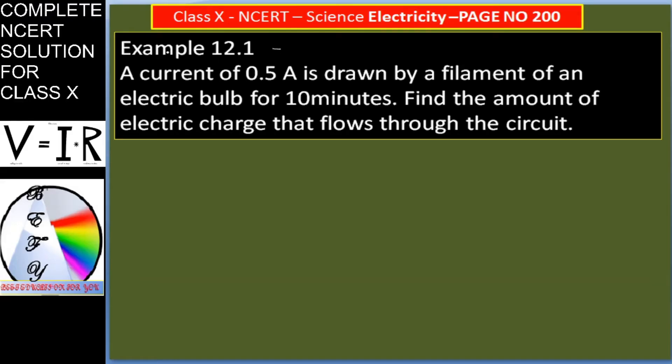Today we are going to see Class 10 NCERT Science, Chapter 12, Page 200, Example 12.1. A current of 0.5 ampere is drawn by a filament of an electric bulb for 10 minutes. Find the amount of electric charge that flows through the circuit.